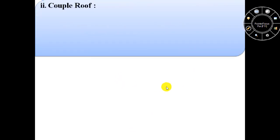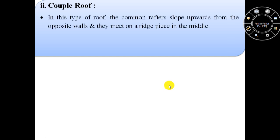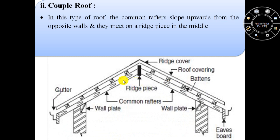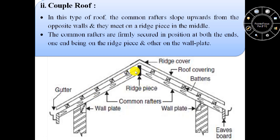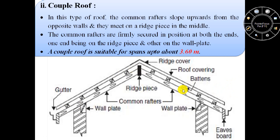The second form of single roof is couple roof. In the couple roof, the common rafters slope upwards from the opposite walls and they meet on a ridge piece in the middle. These common rafters are firmly secured in position at both ends, one end being on the ridge piece and the other on the wall plate. This couple roof is suitable for spans up to about 3.60 meters.